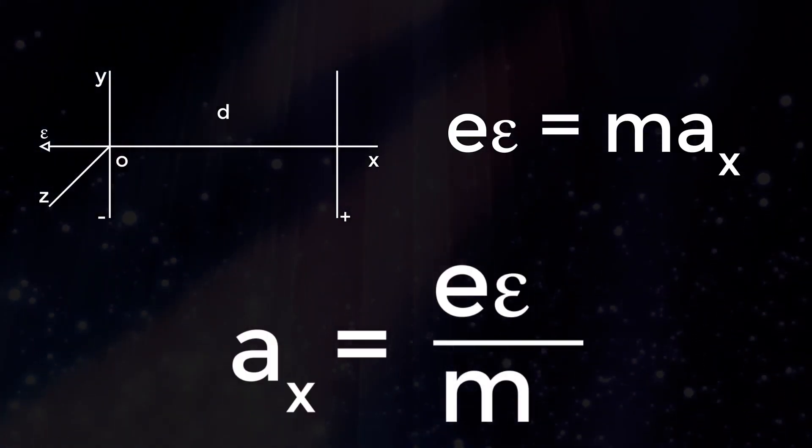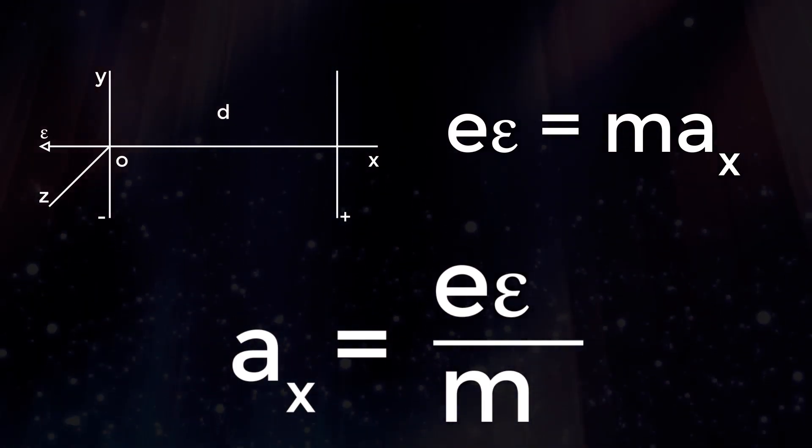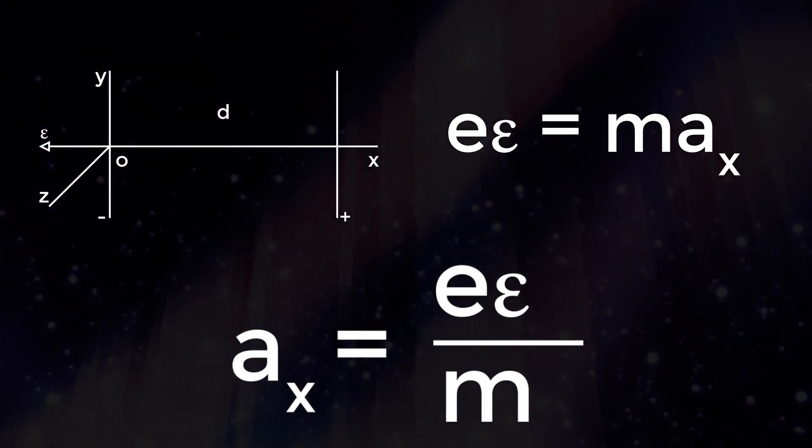eε equals m times ax. Therefore, ax equals eε by m.